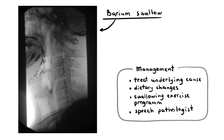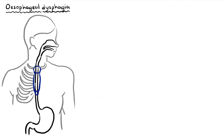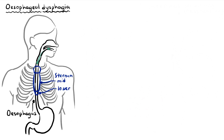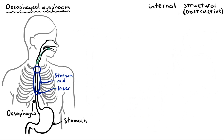The second type of dysphagia is esophageal dysphagia. In esophageal dysphagia, patients are able to initiate the swallowing process but often feel discomfort in the mid to lower sternum as food passes through the esophagus. Again, esophageal dysphagia can result from two underlying causes: structural, which is an obstructive cause, or propulsive, a neurological cause.